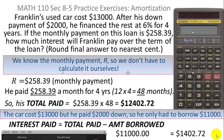So the interest he paid was $1,402.72. So over the course of that four years, in order to borrow $11,000, Franklin had to pay a total interest of $1,402.72.